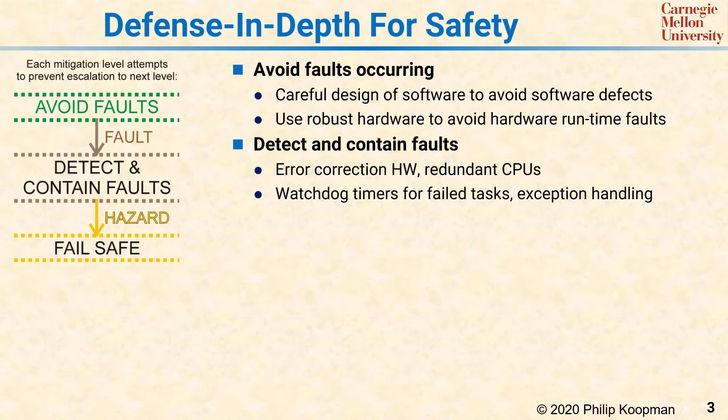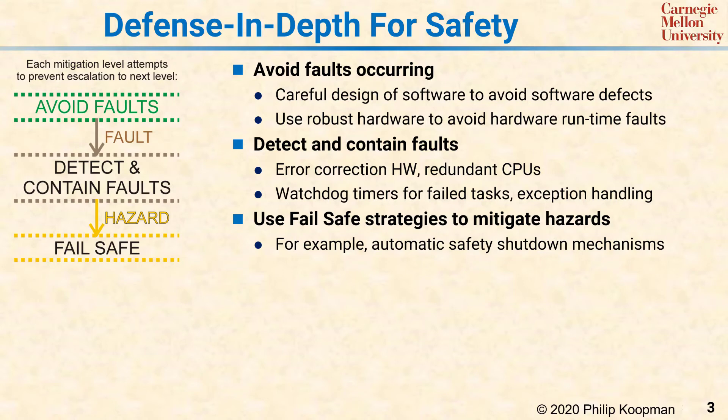Systems typically use fail-safe strategies to mitigate hazards. For example, a system might perform a safety shutdown if it detects a hazard. Or a fail operational system might switch over to redundant backups to maintain safe operation. In an ideal world, a fail safe should never actually be needed. But the real world is a messy place and things go wrong, so fail safes are necessary to provide a level of safety protection beyond simple fault detection and containment when things eventually do go wrong.